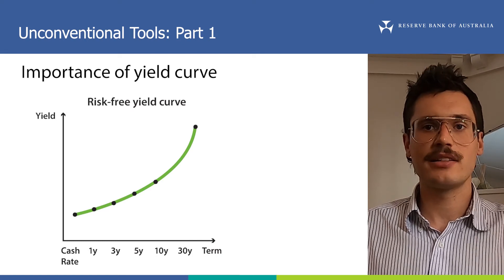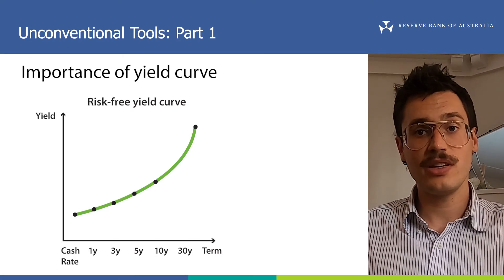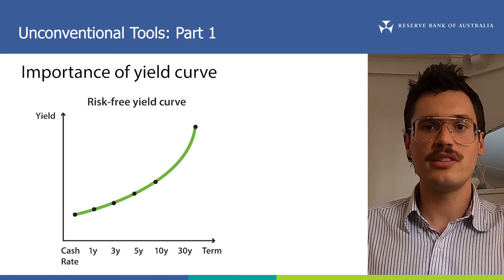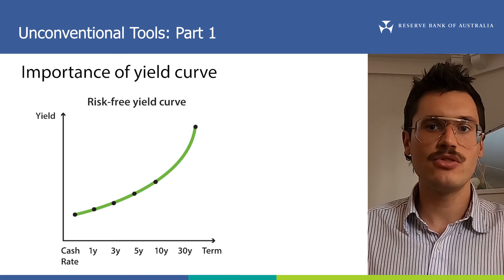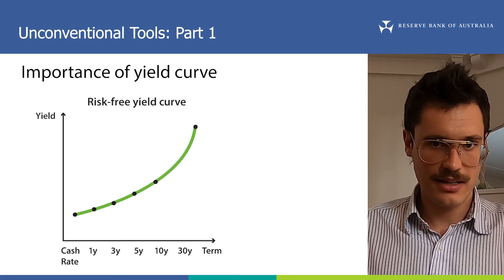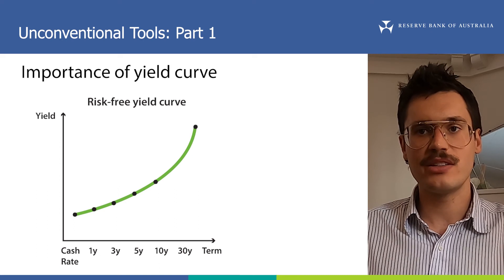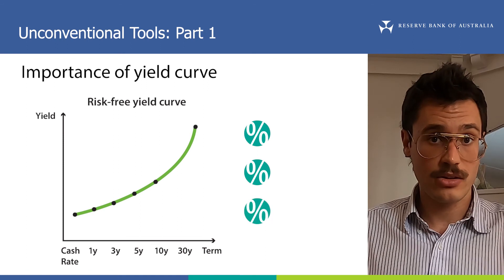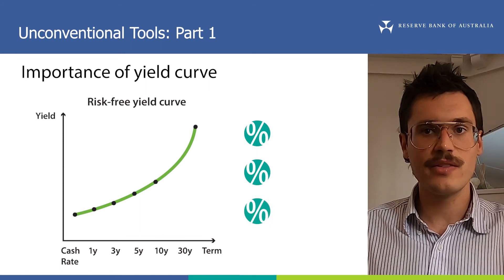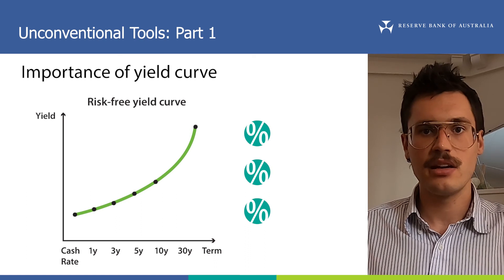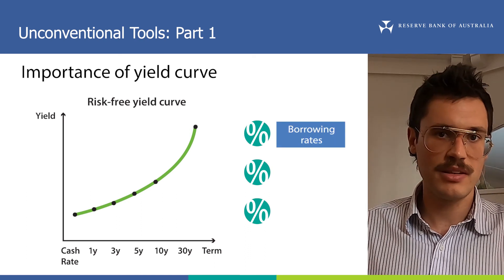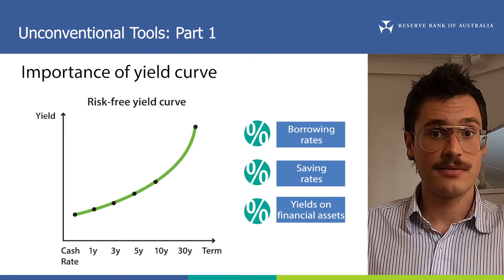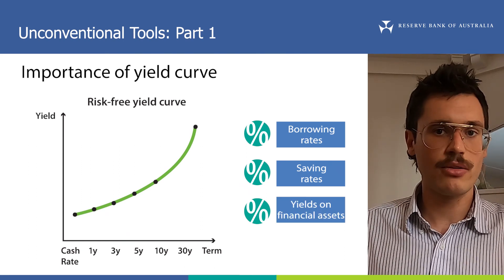So regardless of whether the central bank targets a quantity of purchases, a specific yield, or both, lowering the yield curve reduces government bond yields, helps to reduce interest rates investors expect in the future, and gives them more confidence in their expectations. This flows through to other interest rates in the economy because the yield curve is an important reference point for many interest rates, including borrowing rates for households and businesses, interest rates on savings accounts, and yields for other financial assets. It also reduces the cost of borrowing for the government.